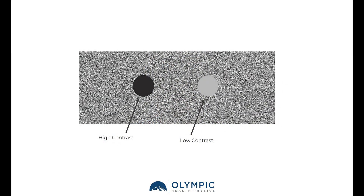In this example, we show two different objects in a noisy background. One object has high contrast, the other has low contrast. It's much easier to see objects that have high contrast because they can be easily differentiated from the background — their signal is very different than the background. Whereas a low contrast object has signal that is similar to the noise in the background, making it more difficult to visualize.